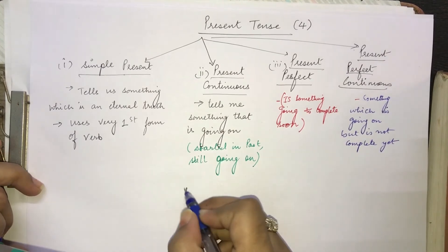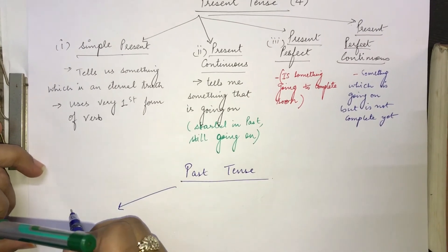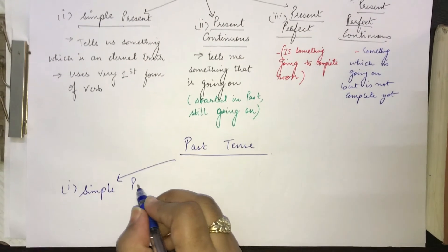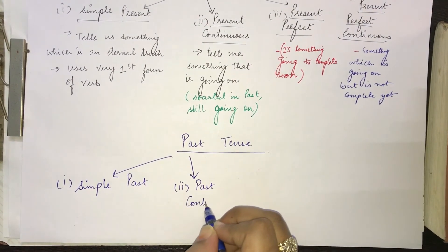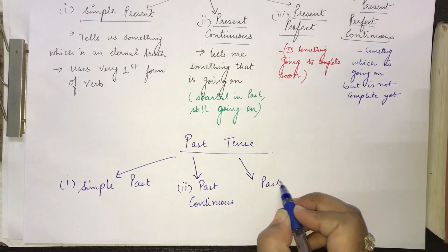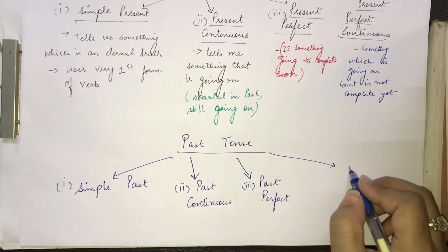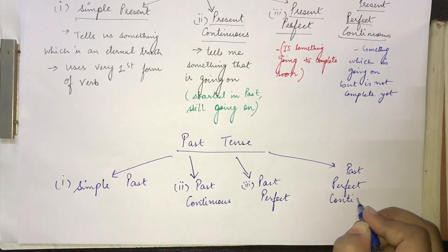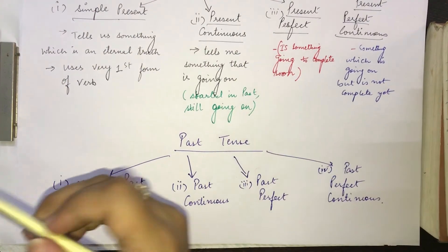Similarly, past tense is going to have four different types. The first one is simple past, the second is past continuous, the third is past perfect, and the fourth is past perfect continuous. It is important that we see each of these categories with examples.